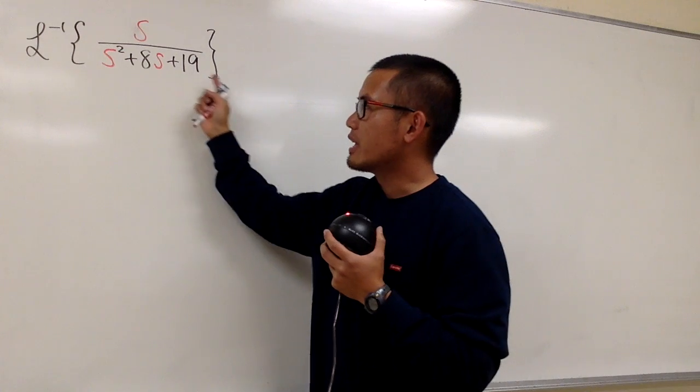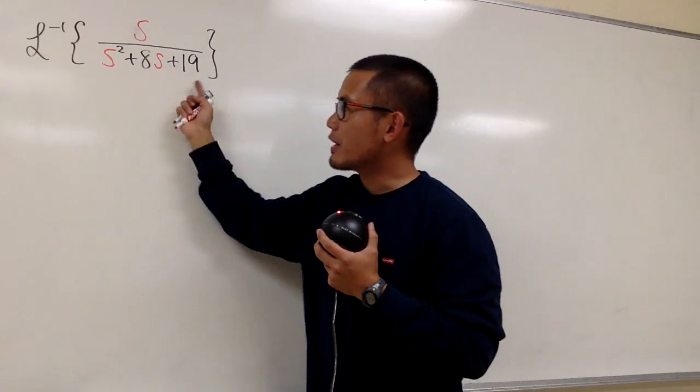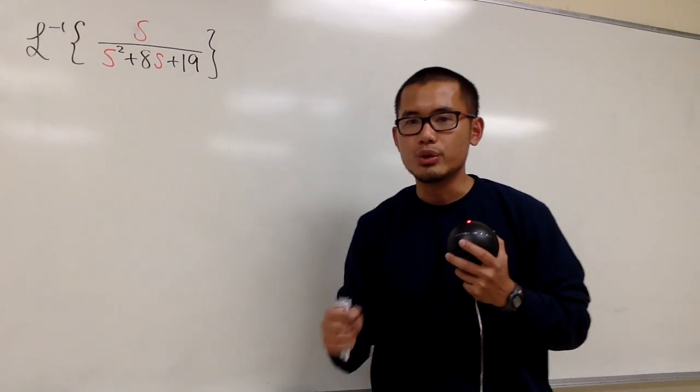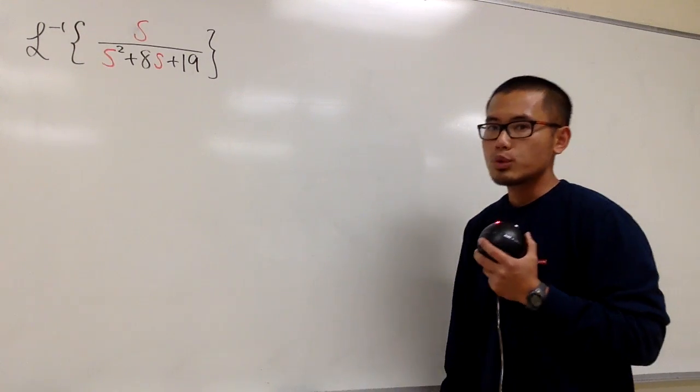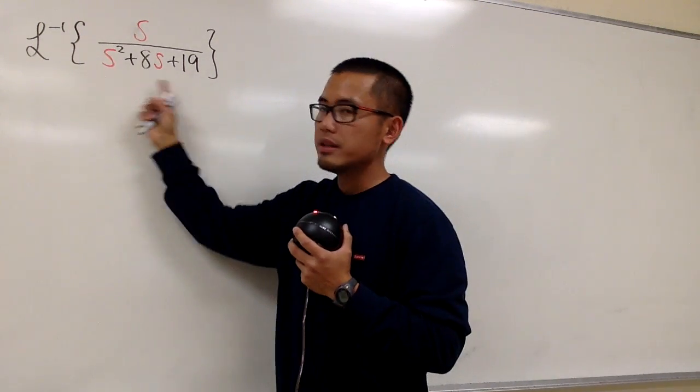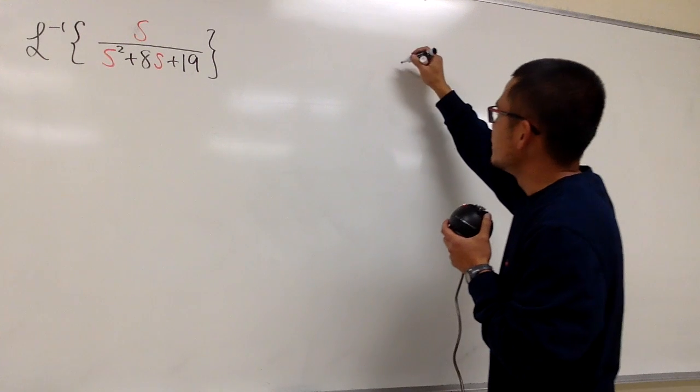But let me tell you, we cannot factor this. And the worst thing is that this right here does not have any real root. So what we'll do is we will complete the square in the denominator. Let me show you how to do that on the side here.